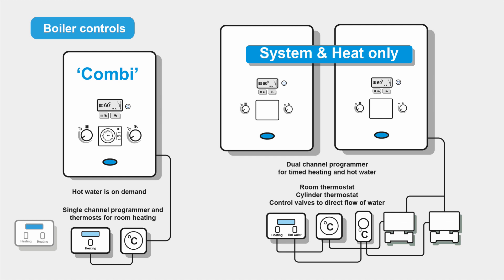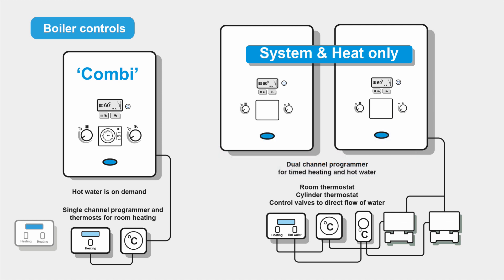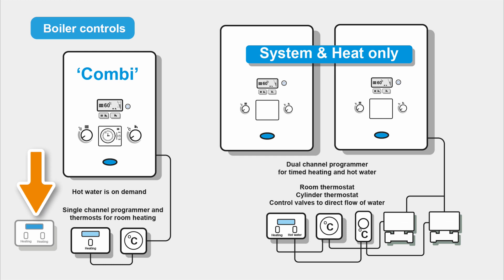When it comes to boiler controls, the combi is the simplest - hot water is on demand so you generally don't have controls for hot water. You can change the temperature of the flow from the boiler itself, but that's about it. You do have control over your room heating and radiators. You'll have a programmer for when you want heating to come on and a room stat to measure the temperature. Combis generally have a single channel programmer, though you can get dual channel for another heating zone such as upstairs/downstairs or underfloor heating.